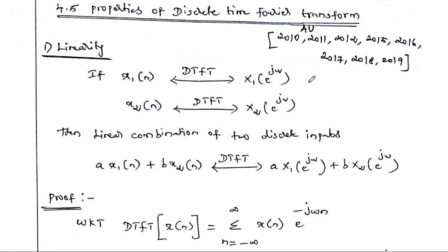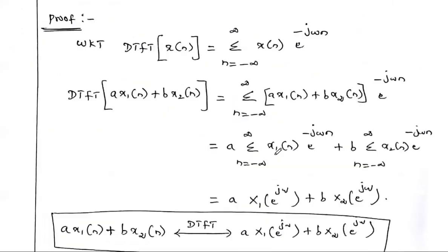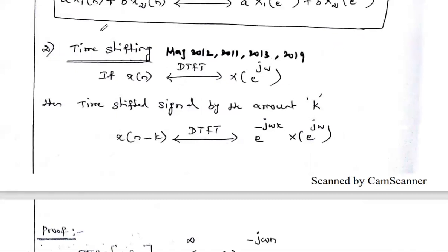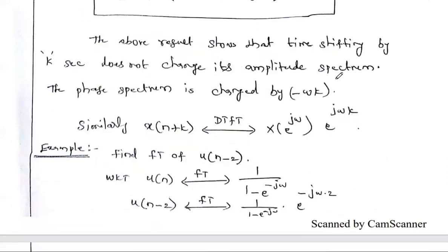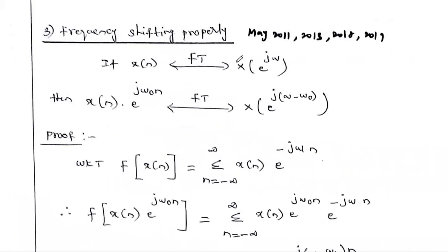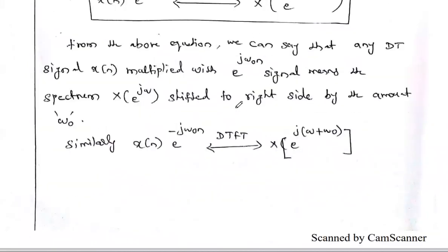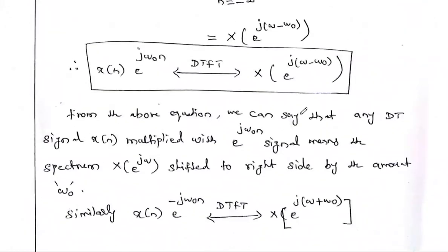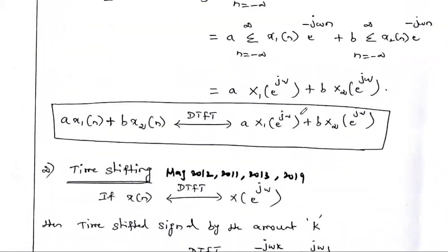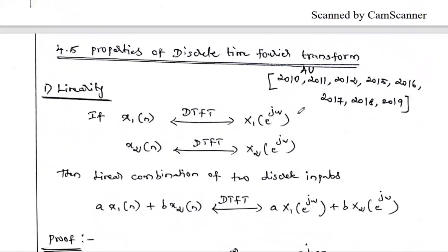Sometimes they ask to state and prove specific properties like the time shifting property — which appeared in 2011, 12, 13, and 19 — frequency shifting property, and the convolution property. If you study six or seven of these properties, you will be able to answer one big question in the fourth unit.